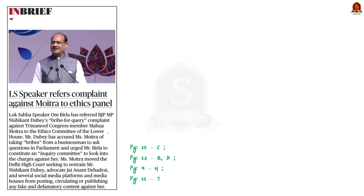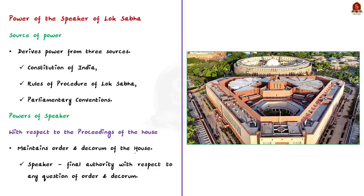The next news article reports that the Speaker of Lok Sabha referred a complaint against MP Mahua Moitra to the ethics panel. The complaint is called 'bribe for query' — the allegation was that she was taking bribes from a businessman to ask questions in parliament. In this context, let us discuss the powers of the Speaker. The speaker derives power from three sources: the Constitution of India, the rules of procedure of Lok Sabha, and parliamentary conventions.